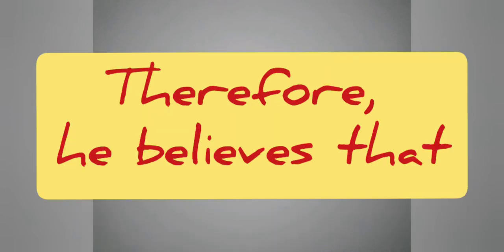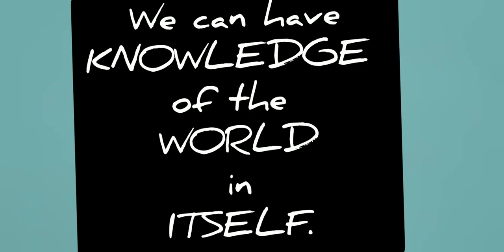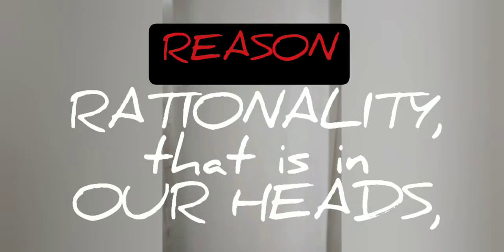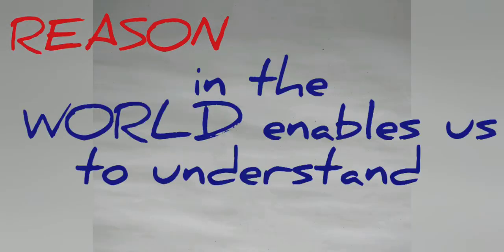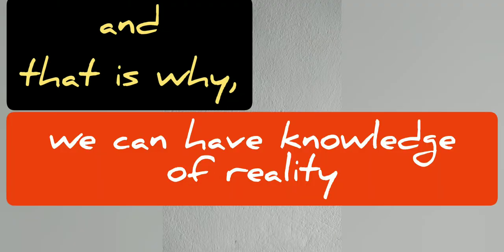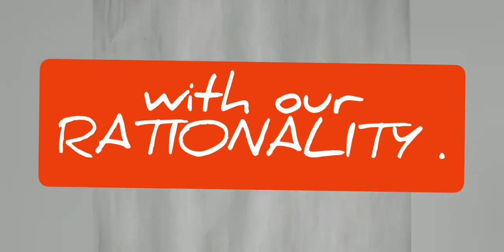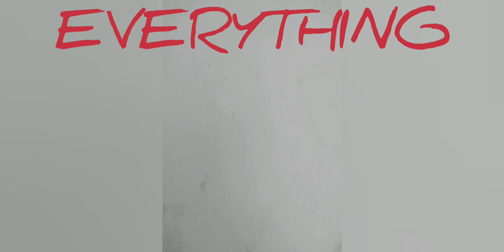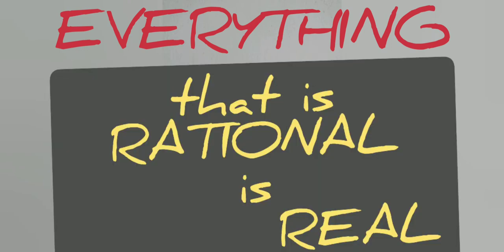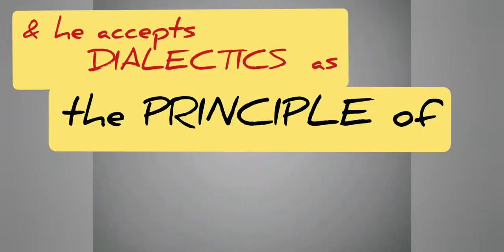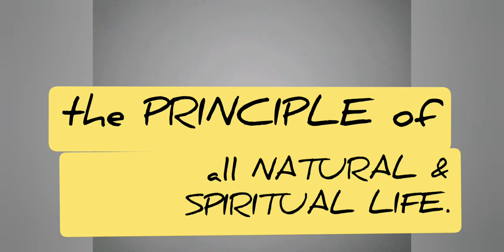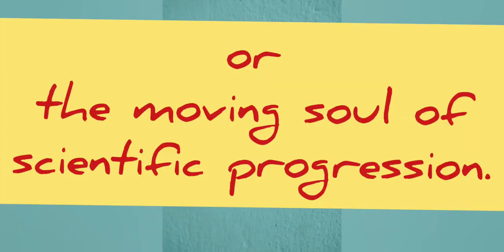Therefore, he believes that we can have knowledge of the world in itself. This is possible because reason — that is, rationality — that is in our heads, that is in us, is in the world itself. Reason in the world enables us to understand reality, and that is why we can have knowledge of reality with our rationality. Hegel argues that everything that is rational is real, and everything that is real is rational, and he accepts dialectics as the principle of all natural and spiritual life, or the moving soul of scientific progression.